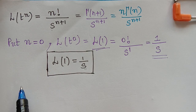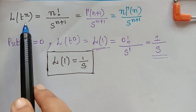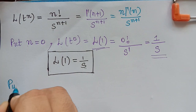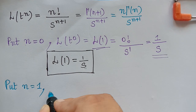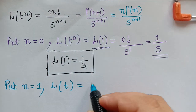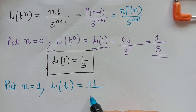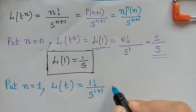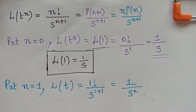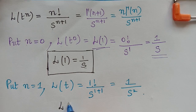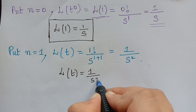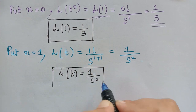The next result is obtained by putting n equal to 1. The Laplace transform of t to the power 1, which is t, equals 1 factorial divided by s to the power 1 plus 1. Since 1 factorial is 1, this gives 1 divided by s squared. Therefore the Laplace transform of t equals 1 over s squared.